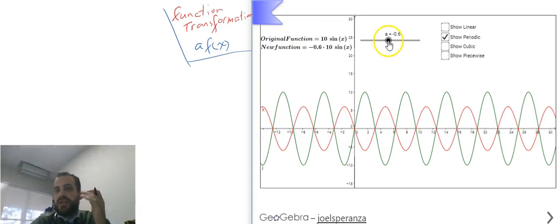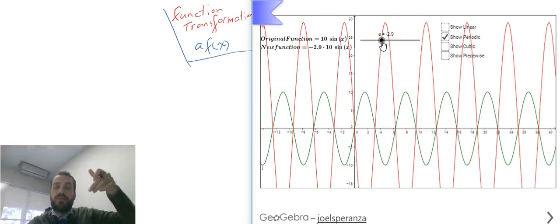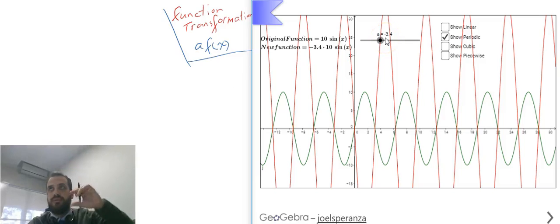If a value is negative, it flips. And if a value is greater than 1, it's going to stretch out and also be flipped. Sorry, greater than negative 1. More magnitude than negative 1. It's going to stretch and flip.